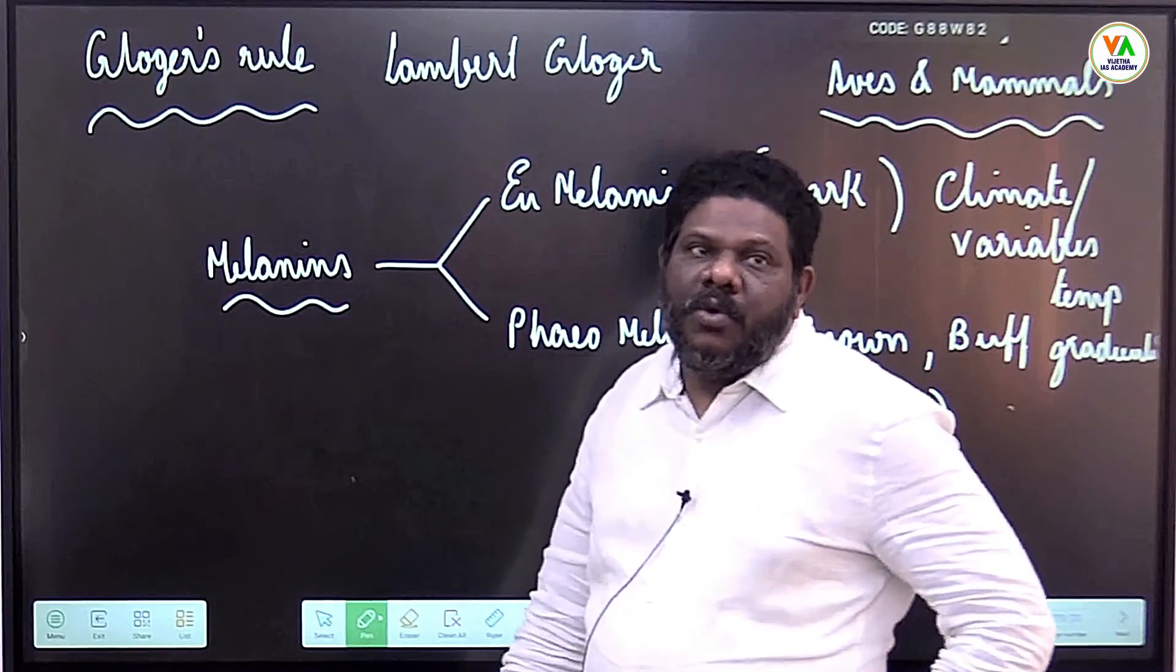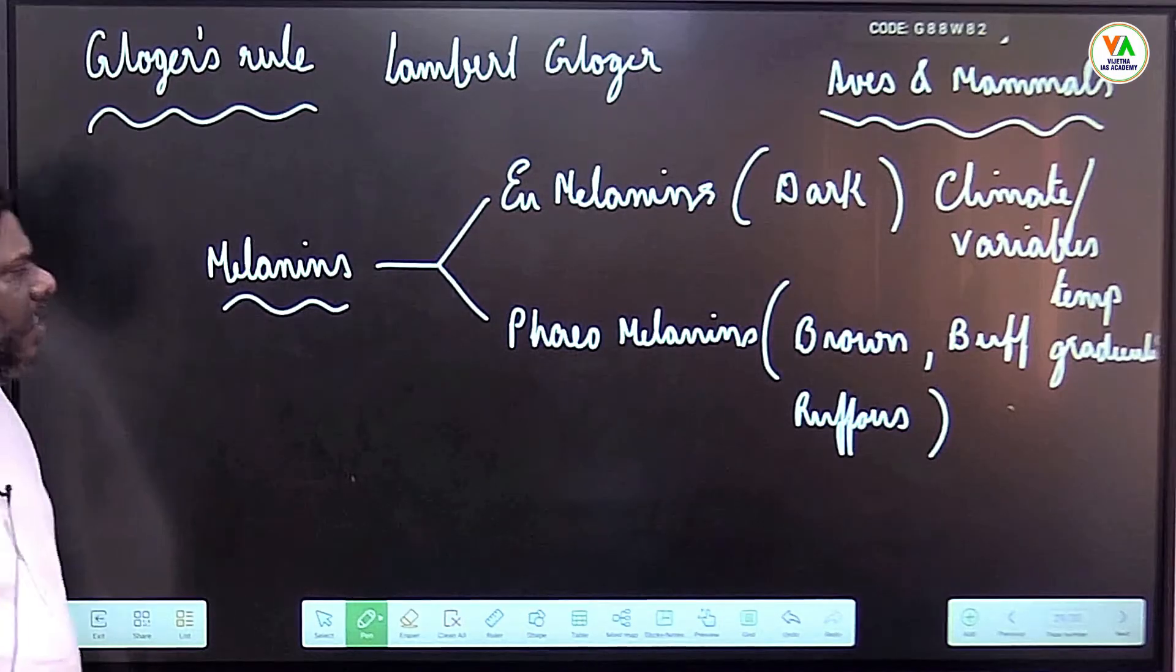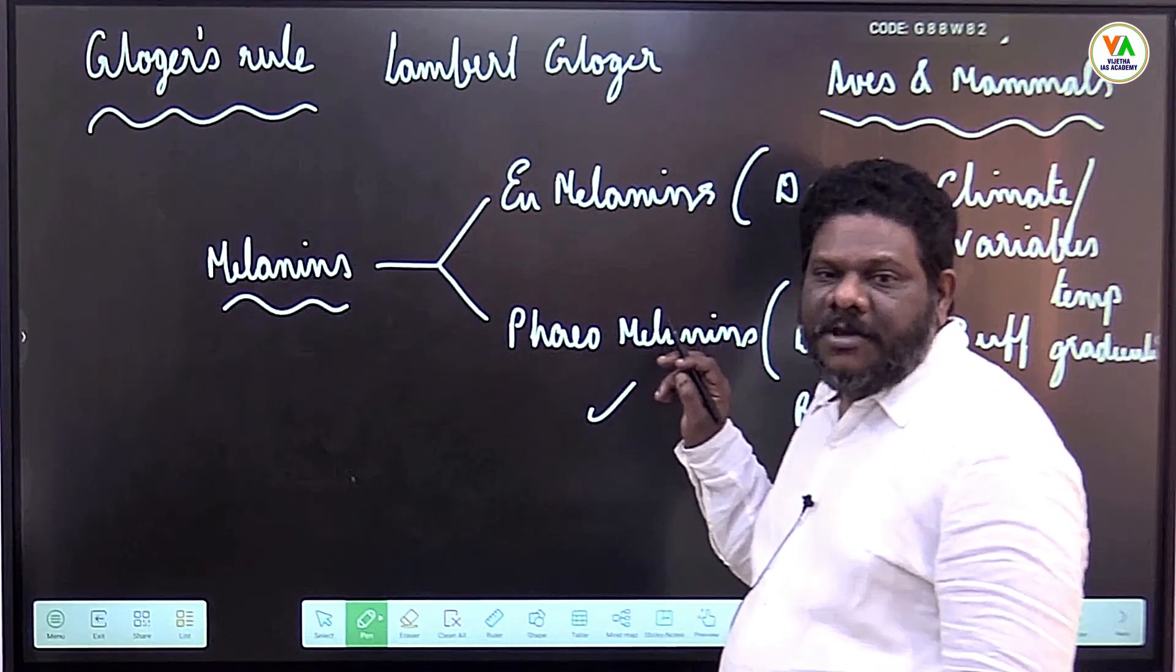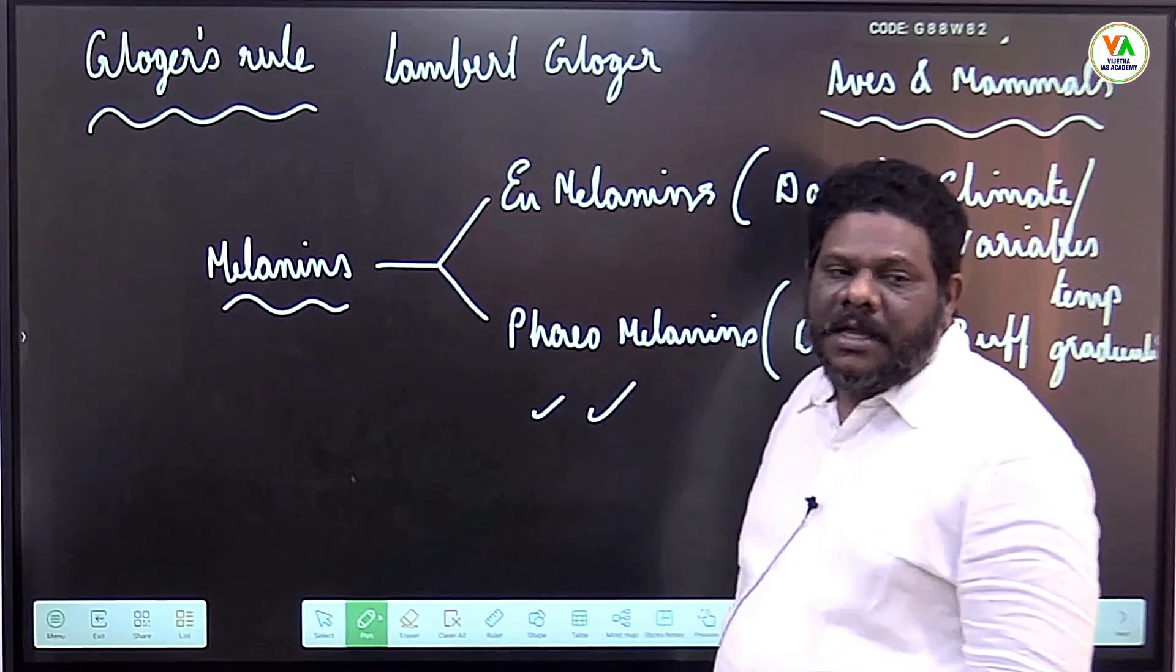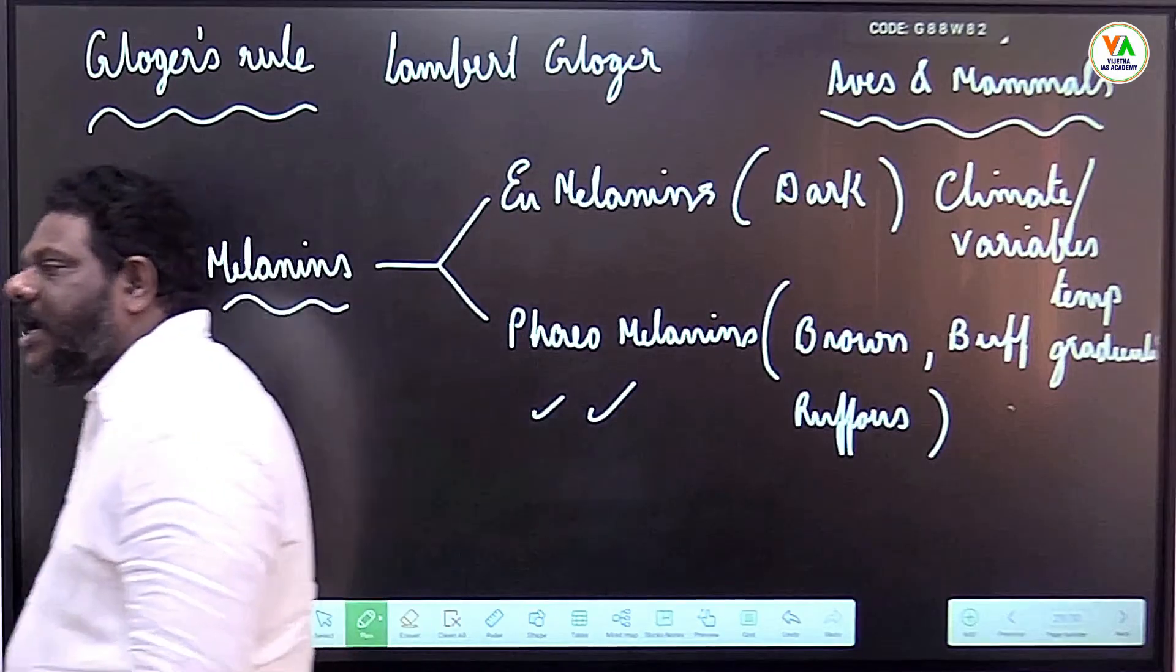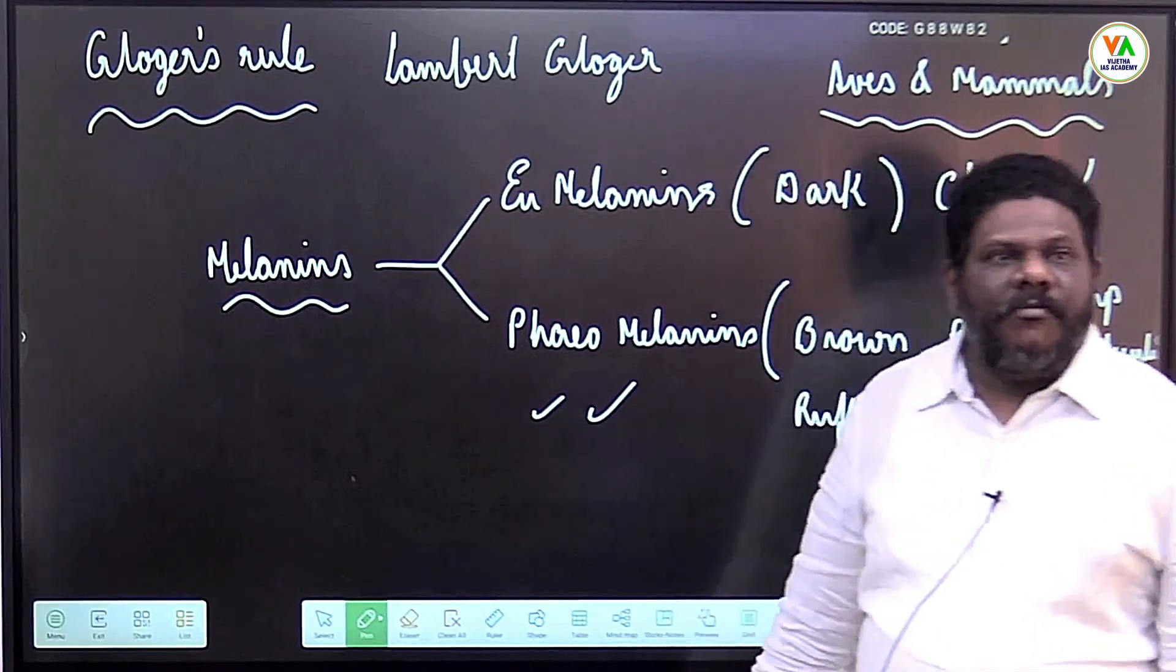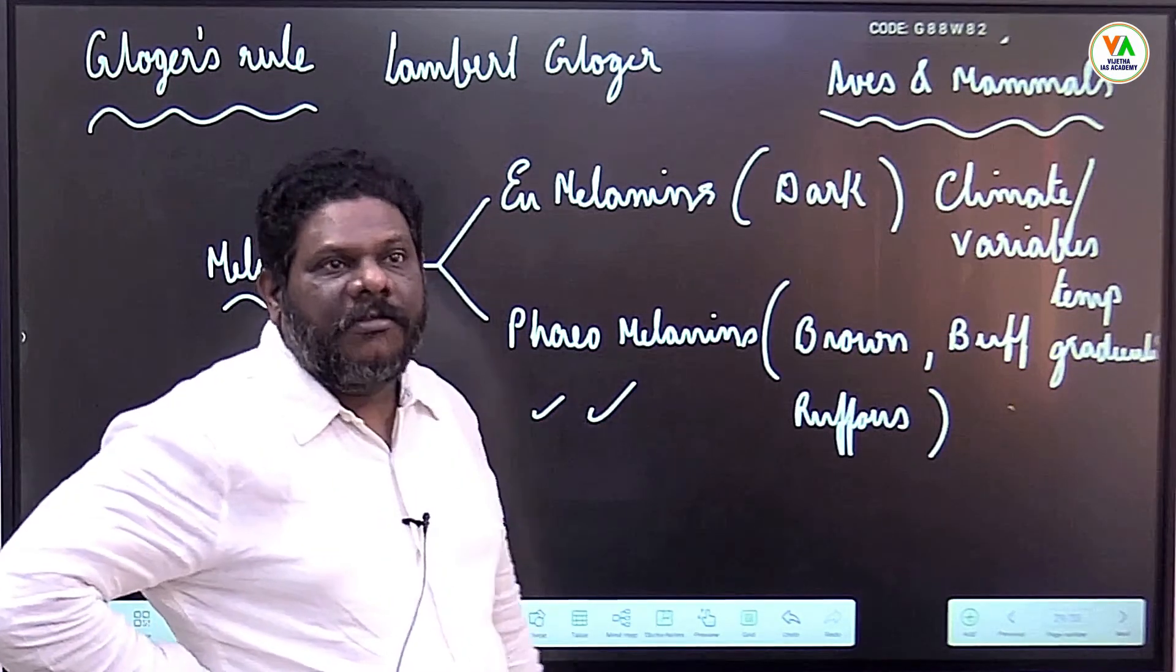Animals living in warm humid conditions with low rainfall see increased pheomelanin secretion, and therefore skin color exhibits various shades of brown. At higher latitudes, the secretion of both eumelanin and pheomelanins decreases, therefore they have faded skin color.